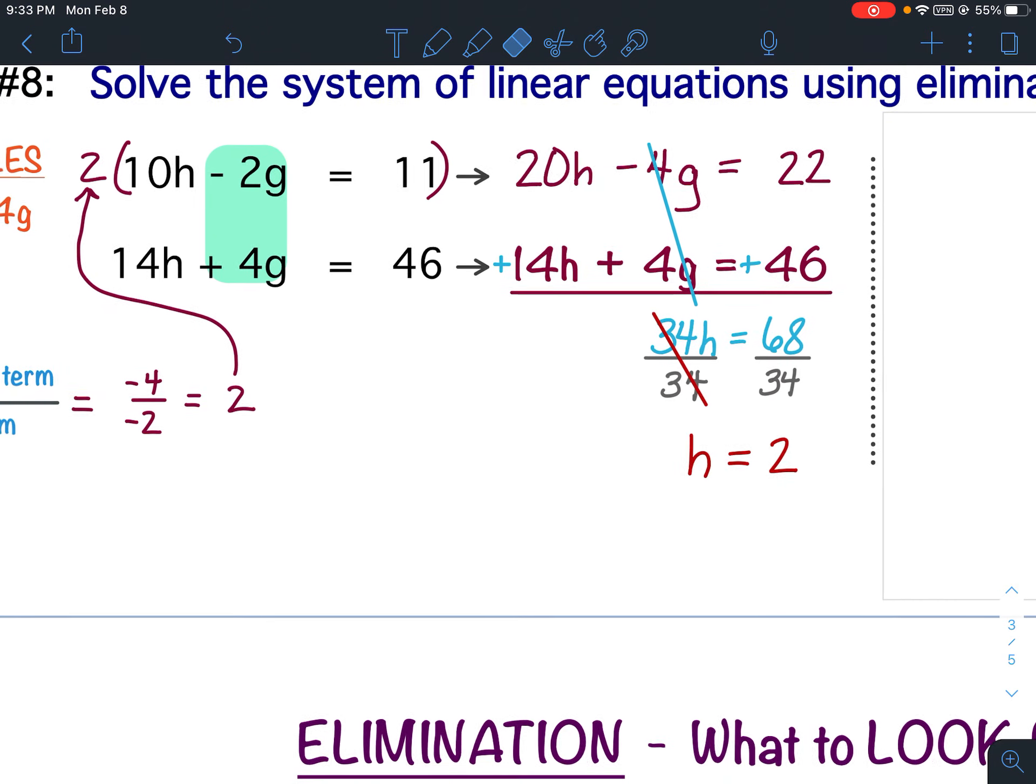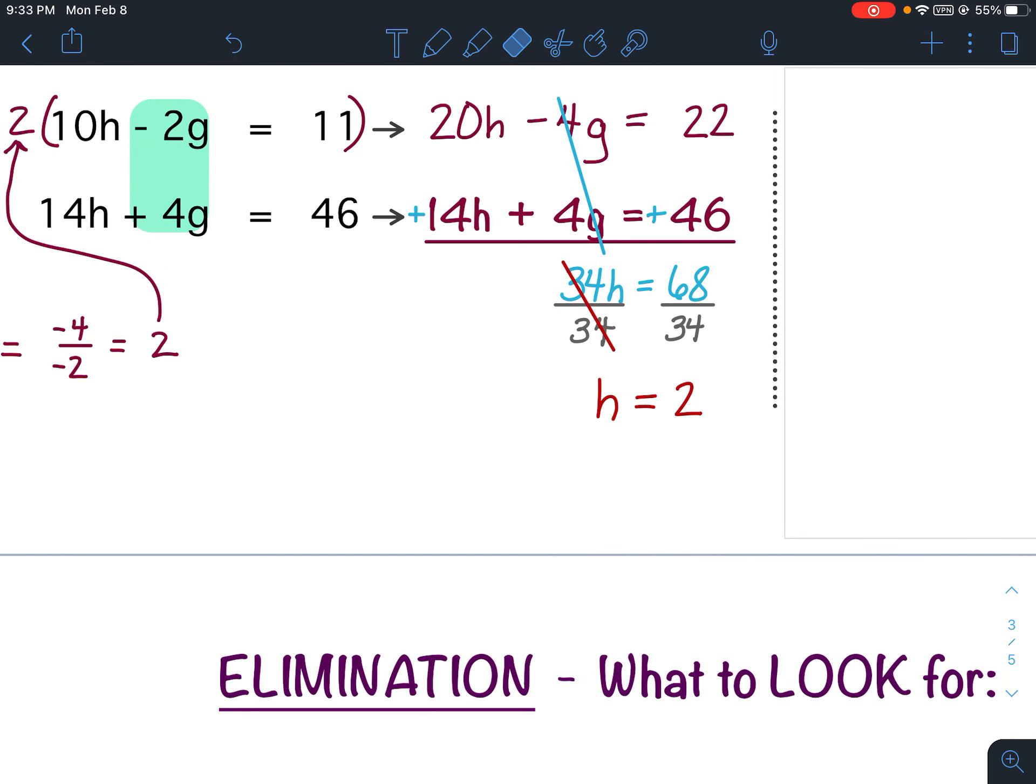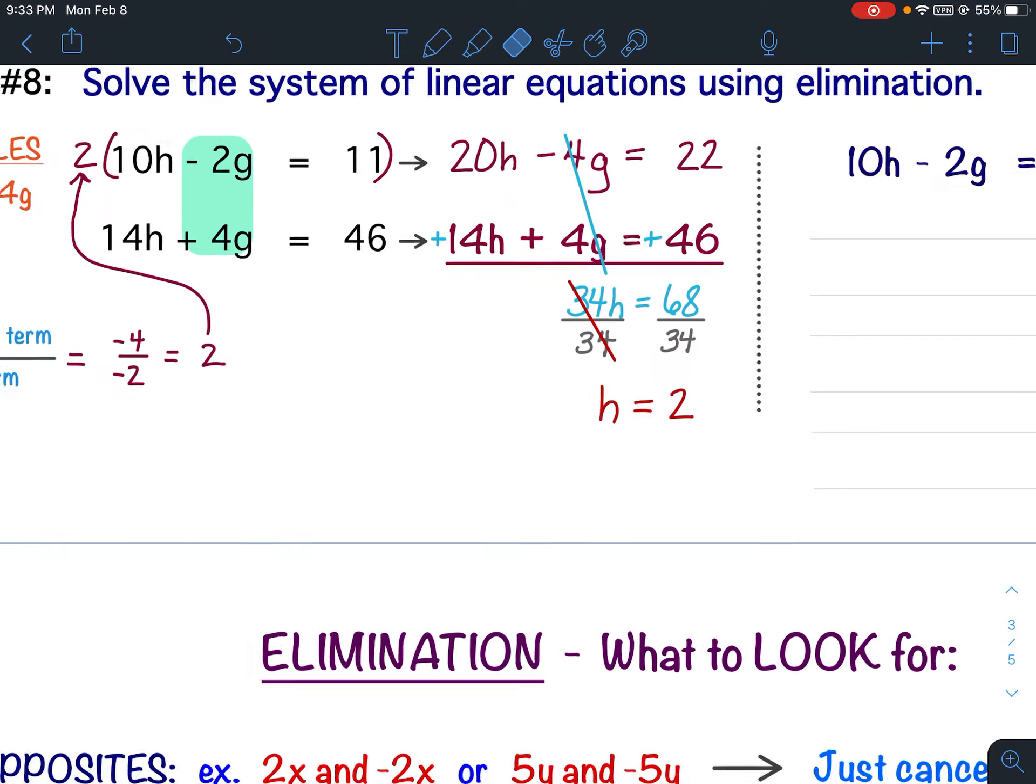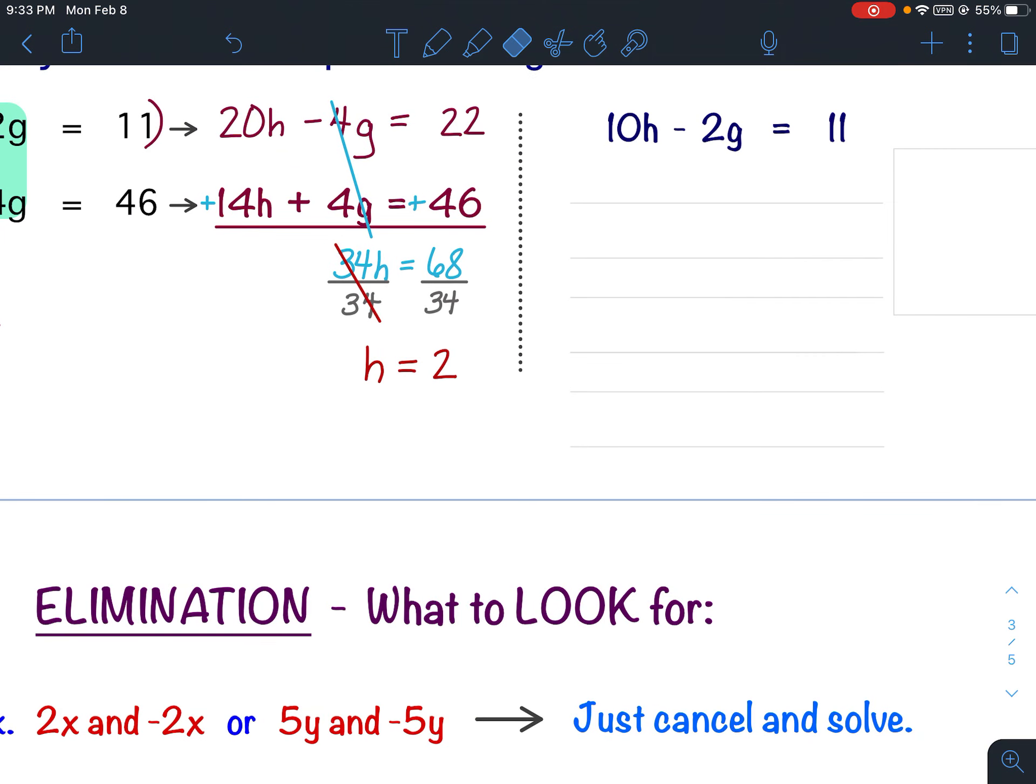68 divided by 34 is 2. So we solved for the h. Now we need to solve for the g. I'm going to use the top equation because those numbers are the smallest. So I'm going to use the top equation.